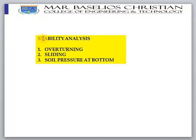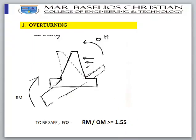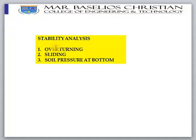The stability analysis of a retaining wall is checked in three phases. The first is stability against overturning. Overturning means that because of the soil pressure and surcharge load, the retaining wall might topple over — this is called the overturning moment.